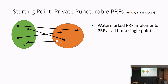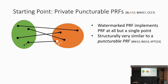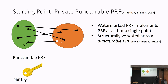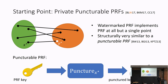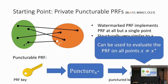Recall our general blueprint: we want to give out a PRF key that evaluates the PRF everywhere except we change the value at a single point x*. This is structurally very similar to a puncturable pseudorandom function. In a puncturable PRF, there's a puncturing algorithm that takes in the PRF key and a point x*, and produces a new key that can evaluate the PRF everywhere except at x* — we puncture away the capability of evaluation at x* while retaining evaluation at all other points.